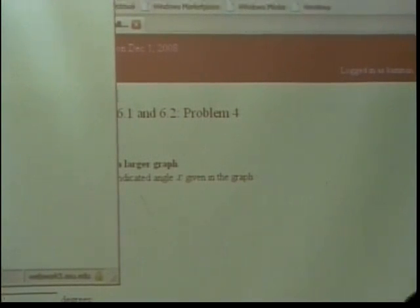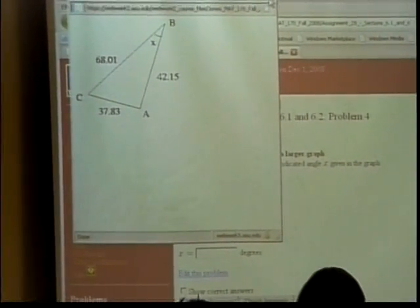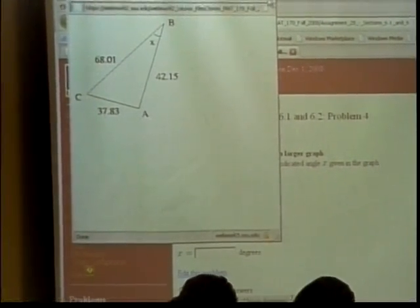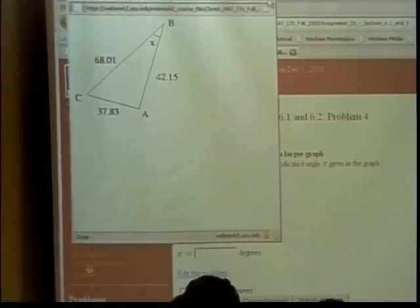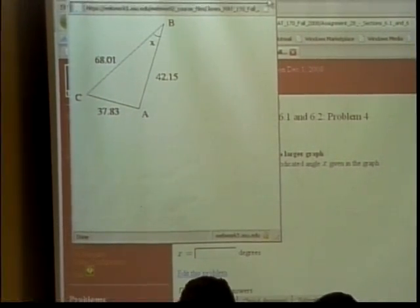All right. Problem number four, you're asked to solve for x. In all the examples we've done so far, we've been solving for sides, how long some side is. We've not been asked to find out how big an angle is. And so, let's put this one together to one of the formulas and find out what the measure of that angle is.